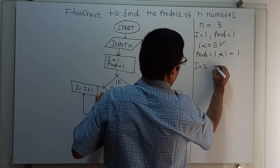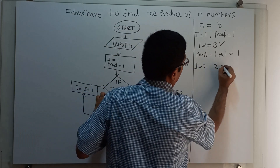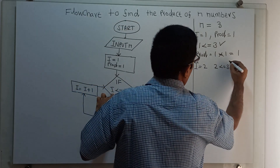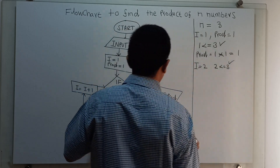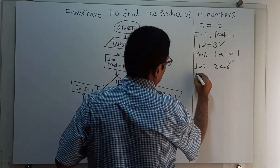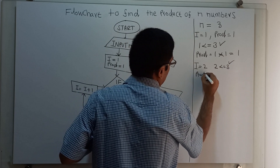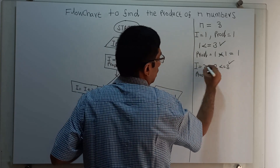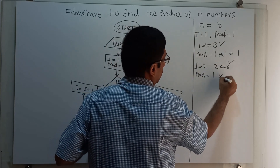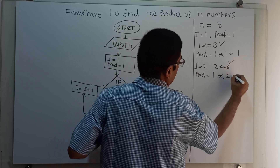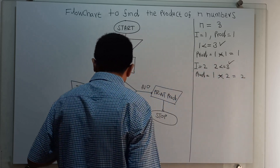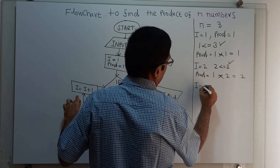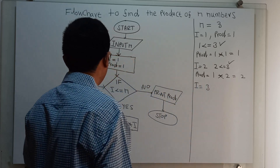I am checking: 2 less than or equal to 3 — this condition is true. Next, prod equal to the existing value of prod, which is 1, into i equal to 2, which gives prod equal to 2. Now i equal to i plus 1, so i equals 3.